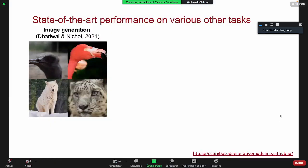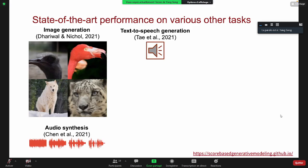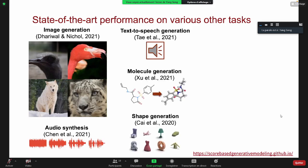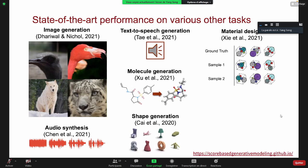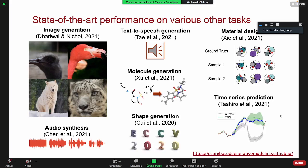Our score-based models, for example, have been applied to image generation on ImageNet and are able to outperform GANs on this dataset. People have also used this for audio synthesis, text-to-speech generation, molecule generation, shape generation, material design, time series prediction, and in all those cases they show better performance than the previous state of the art.